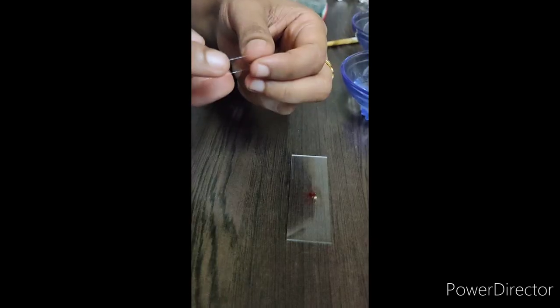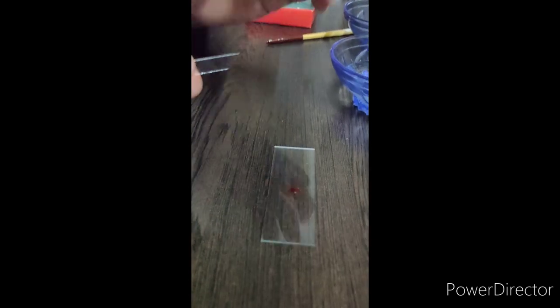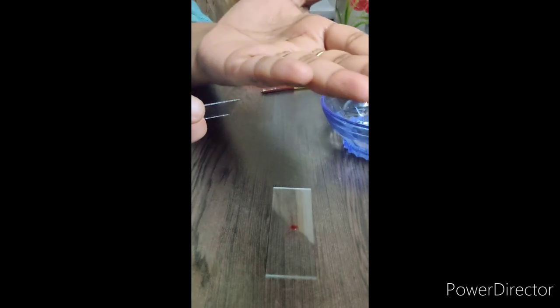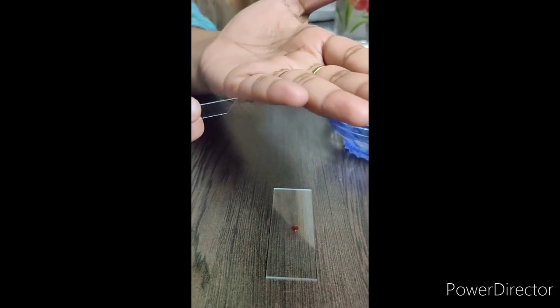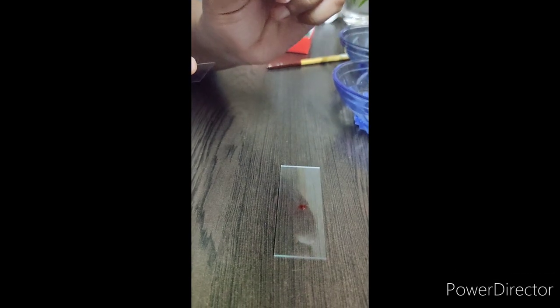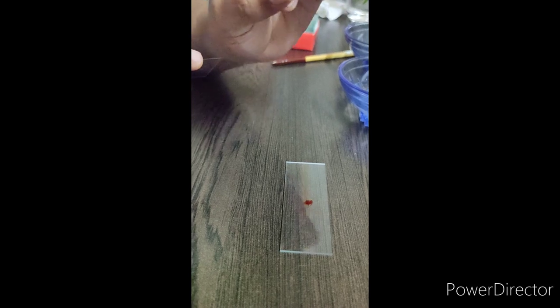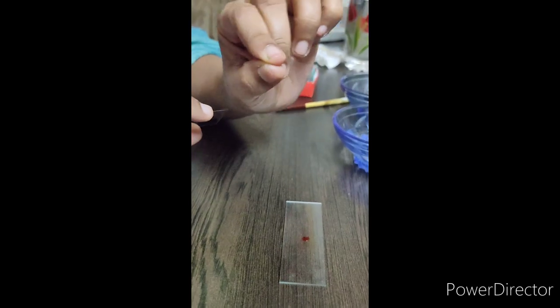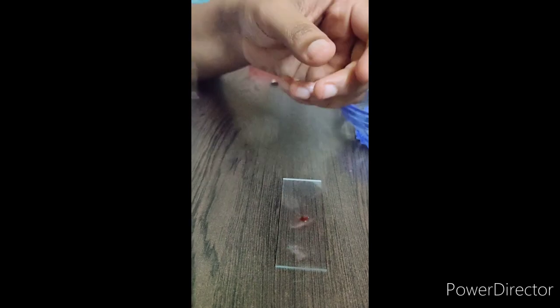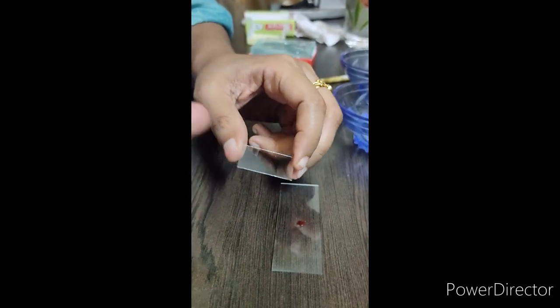See, we are placing the cover glass because the specimen will be kept very near to the lens. And if at all, this water comes in contact to the lens, there is a possibility that fungus may be formed on the lens. And the lens may get destroyed. So, to prevent that, it is always good to use a cover glass on top of your specimen.